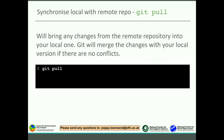Let's go into a bit more detail about those commands. Git pull will bring changes from the remote repository on GitHub into your local one, and git will merge the changes with your local version if there are no conflicts. If there are conflicts, it will tell you that, and it will put messages inside your code which you can go through and correct.